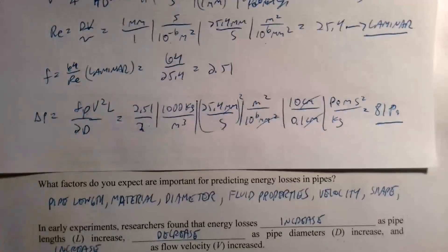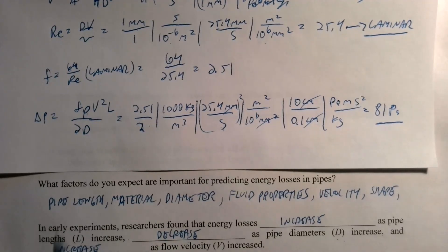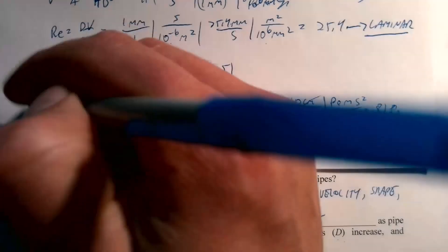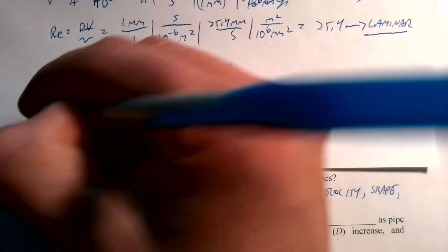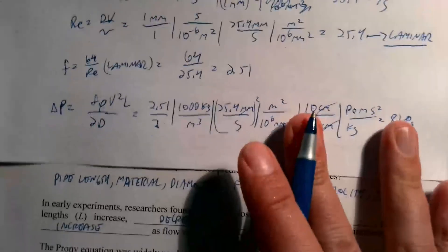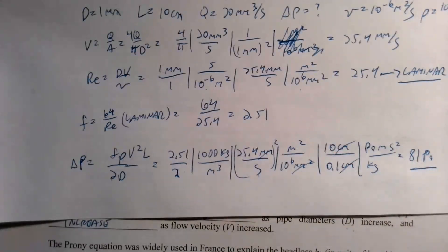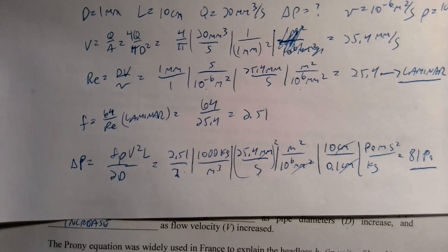That's an example of how you estimate pressure loss in a pipe under laminar flow conditions using the result we worked so hard to derive. That wraps up this session, and next time we'll start talking about turbulent flow.